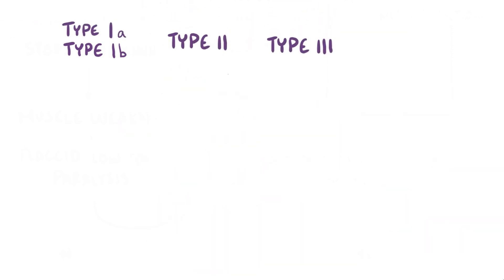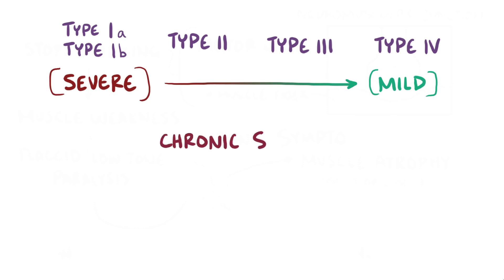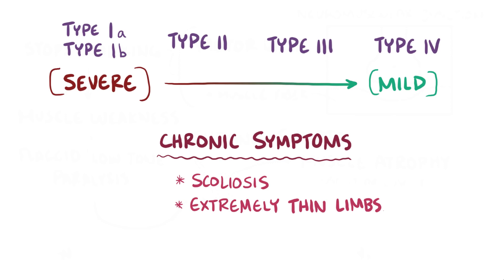SMA types 2, 3, and 4 are each successively milder and have a later age of onset. In addition to muscle weakness, feeding problems, and breathing difficulties, chronic symptoms of SMA include scoliosis due to poor muscle support of the spine and extremely thin limbs due to muscle wasting.